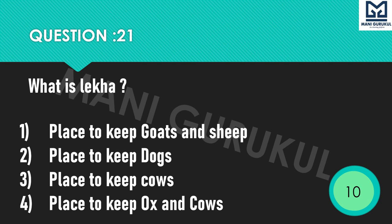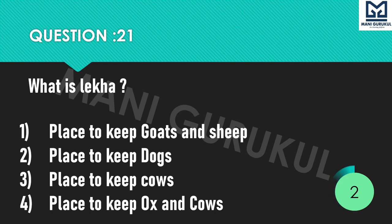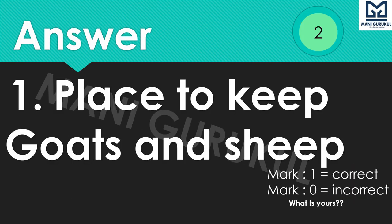Question 21: What is Lekha? Options: 1st Place to keep Goats and Sheep, 2nd Place to keep Dogs, 3rd Place to keep Cows, 4th Place to keep Ox and Cows. Time starts now. Only 4 questions left. Time's up. Answer is 1st: Place to keep Goats and Sheep.